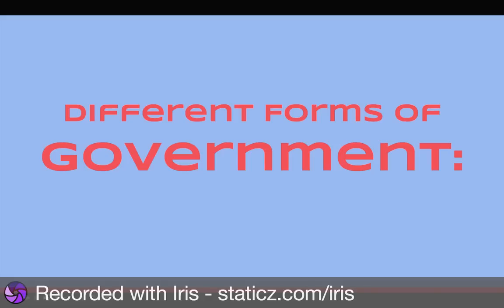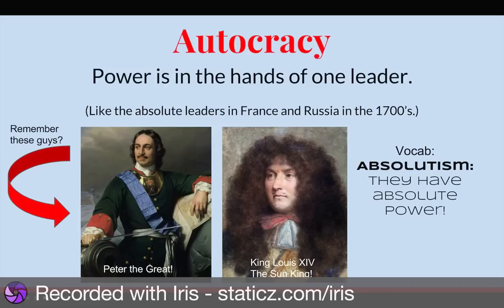Now we just need to cover different forms of government — three vocabulary terms to know before we continue. Number one: an autocracy. An autocracy is when the power is in the hands of one leader, or one leader and his friends.